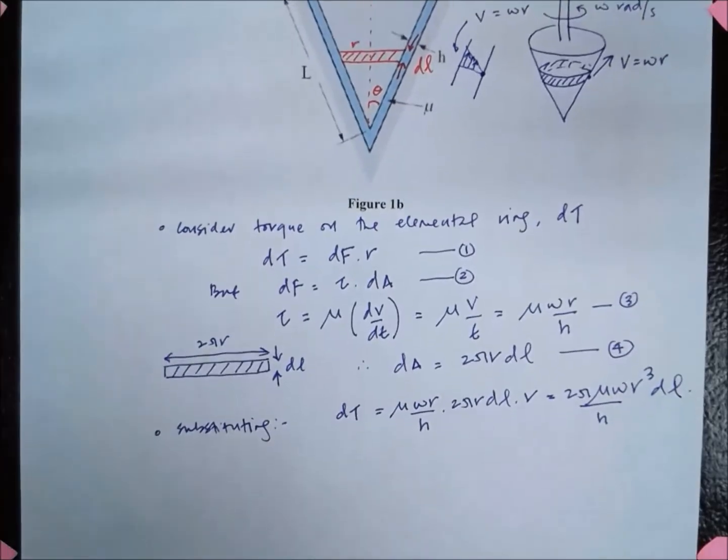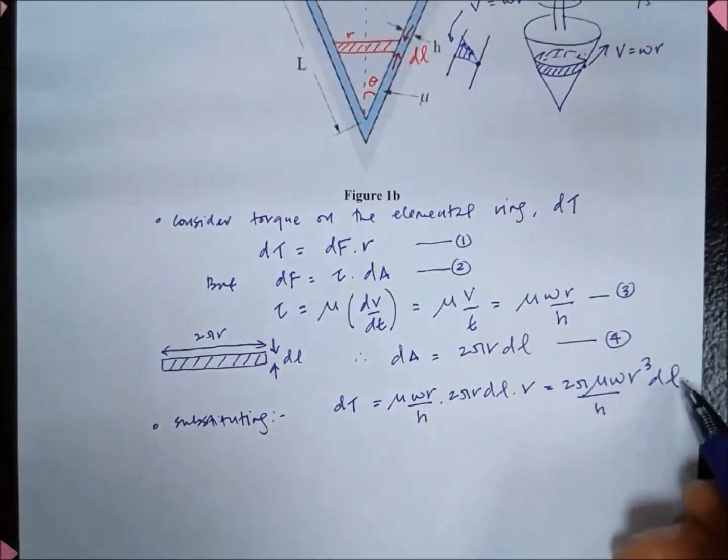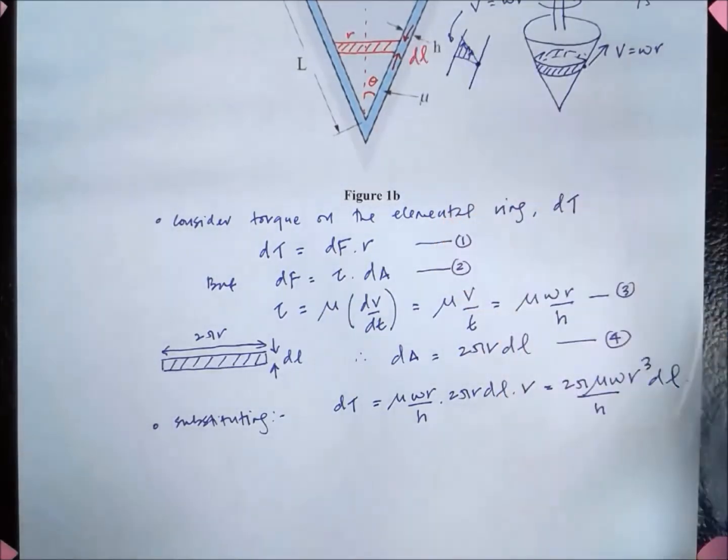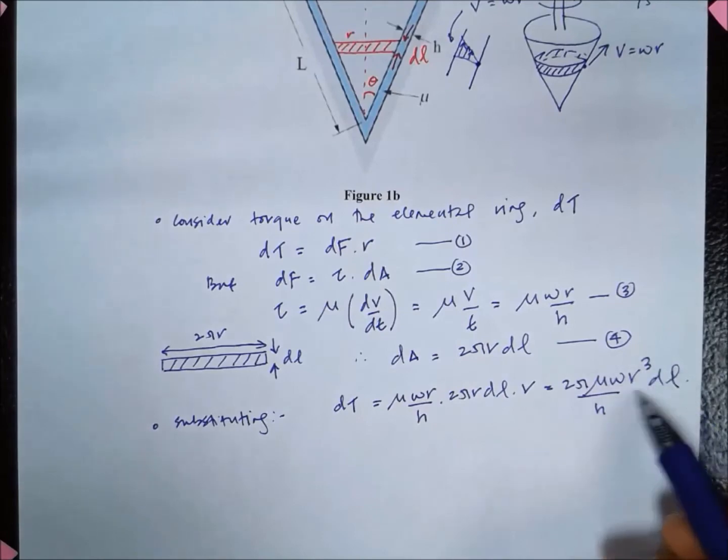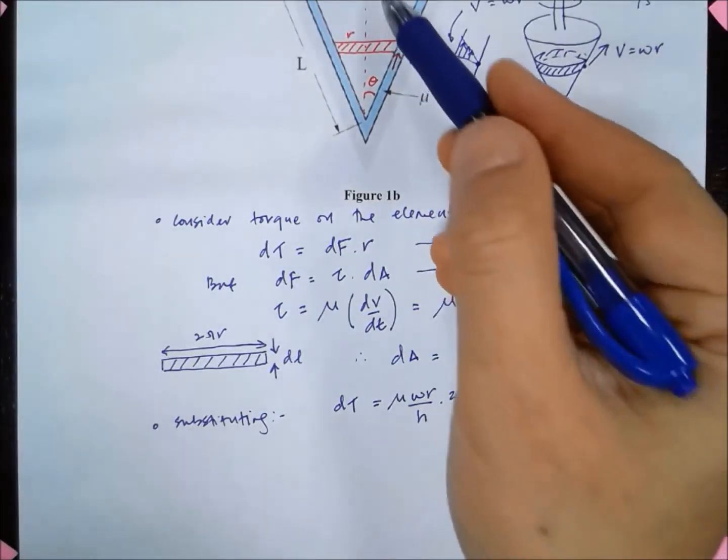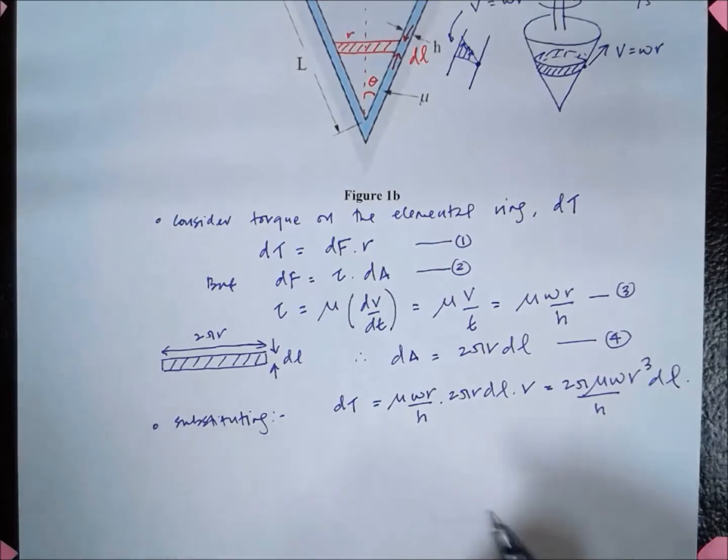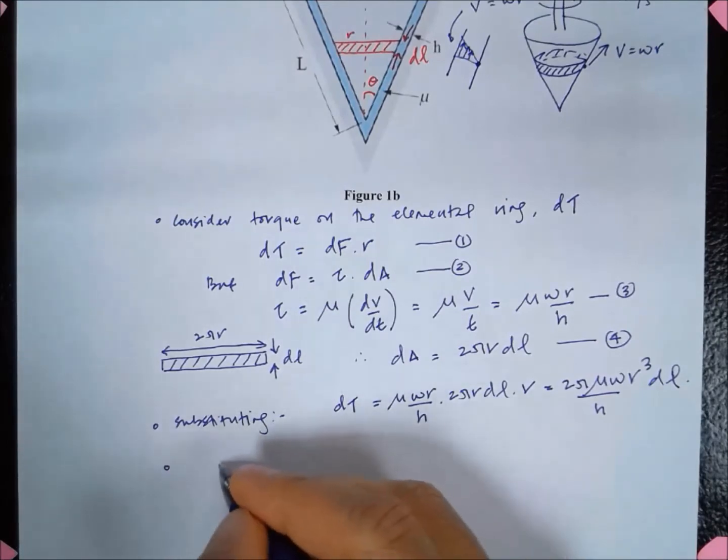But if you consider now, because we have here in terms of dl, we want to change that in terms of dr because these variables here, the parameter which is varying, is actually r on this cone.